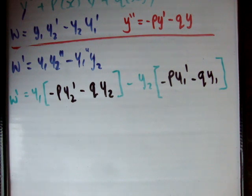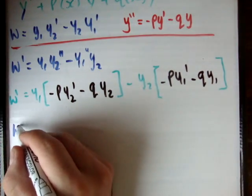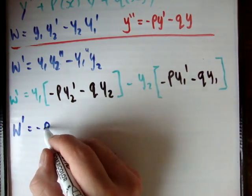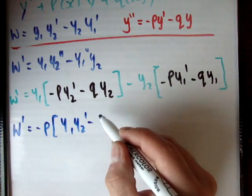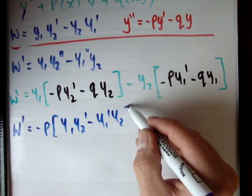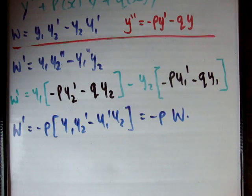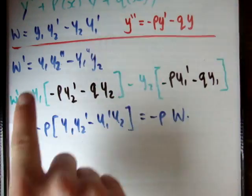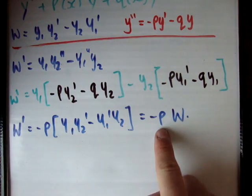Now let's see if we can factorize this. If you pull out p(x), you get w prime is equal to negative p times (y1·y2 prime minus y1 prime·y2), because the q terms cancel out. That expression is exactly our Wronskian, so we find that w prime equals negative p times w.